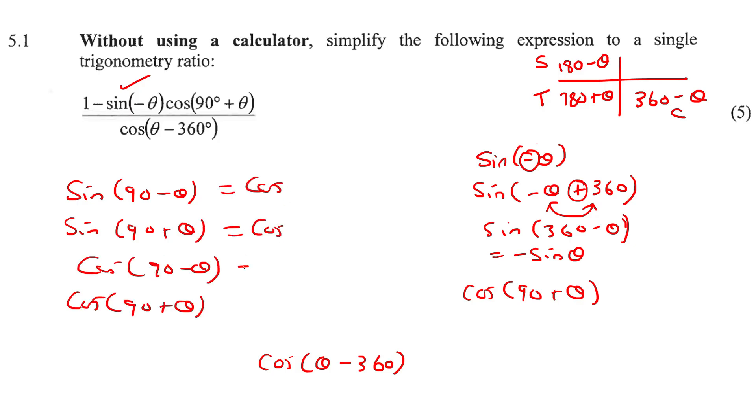So sin becomes cos, cos becomes sin. Most of them just become theta, theta, theta. But this one becomes a negative sin theta. Okay, and that's, of course, the one that they've given us. So we'll just make that negative sin theta.